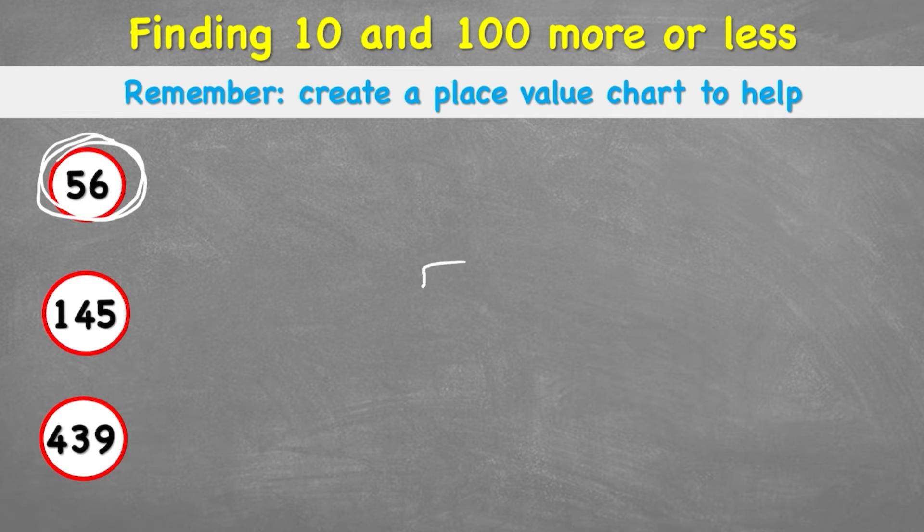So we're working with the number 56. Our tip said to use a place value chart. When I'm making a place value chart, I'm going to have my ones above my 6 and my tens above my 5. Sometimes you might have heard of this ones being called units. That's fine as well, they mean the same thing, ones or units.